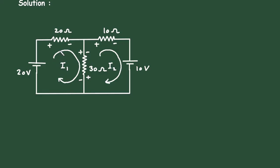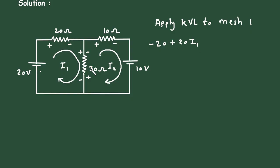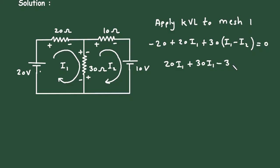Now let's apply KVL to mesh number 1. Starting from this point: minus 20, plus 20I1, plus 30(I1 minus I2) equals 0. Simplifying: 20I1 plus 30I1 minus 30I2 equals 20, giving us 50I1 minus 30I2 equals 20. This is equation number 1.